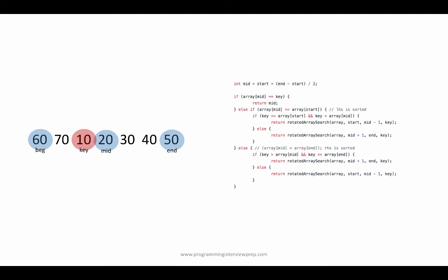Let us see if we could find 10 in this array. Beginning is 60, the end is 50, and mid is at 20. We could see that the number we are looking for, 10, is not in the sorted side which is from 20 to 50. Basically, array[mid] is less than array[end], so 20 to 50 is the sorted side, but 10 is not in that range. So it has to be on the left hand side, and we could discard the entire right hand side.